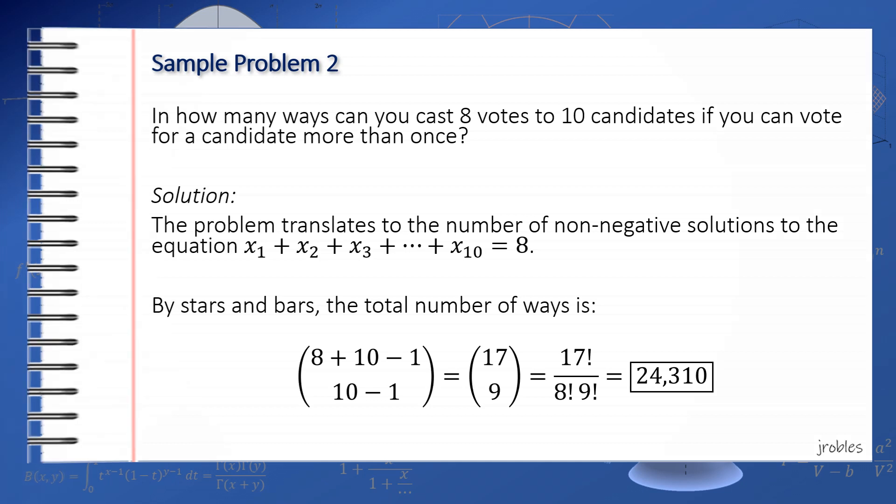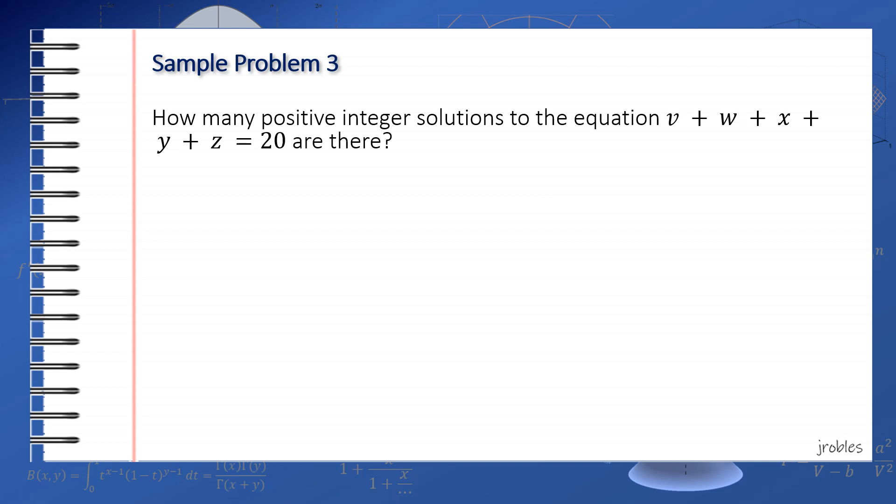For the third problem, how many positive integer solutions to the equation v + w + x + y + z = 20 are there? Unlike the previous two, the stars and bars formula cannot be directly used since we are dealing with positive solutions, which implies that 0 cannot be part of any solution. This is what I had emphasized earlier.